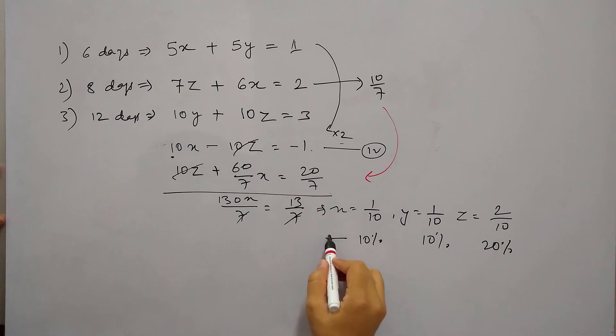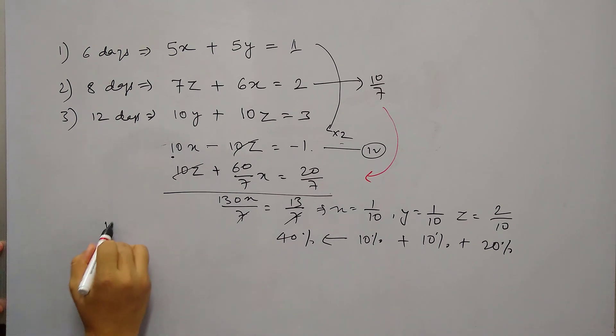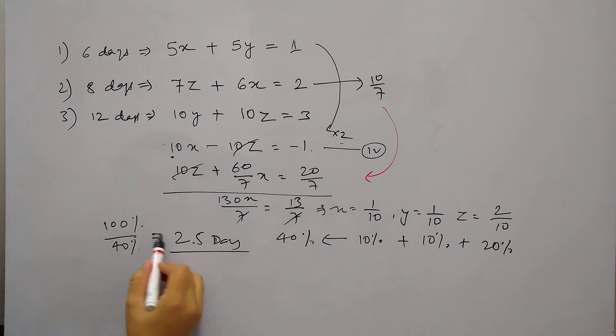So every day X, Y and Z combined they will do 40 percent of the job. So working together X, Y and Z can complete 40 percent of the work every day. So to complete 100 percent of work they will take 2.5 days, which is the answer.